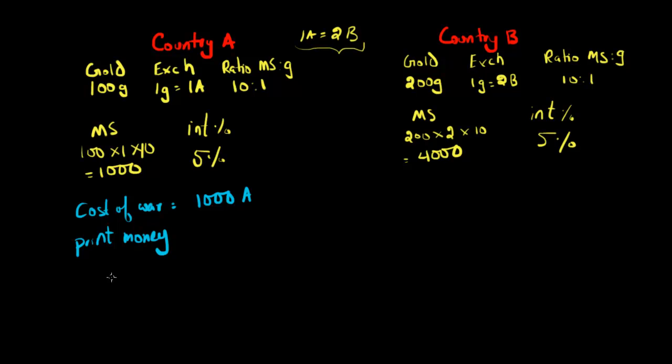So what will happen is that the money supply in the economy will now be equal to this original 1,000 country A dollars, plus the new 1,000 country A dollars the government just printed. So the money supply will be equal to 2,000 country A dollars.